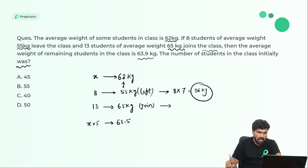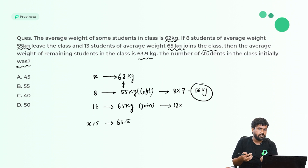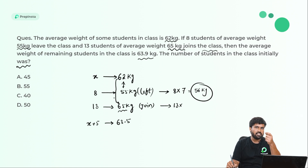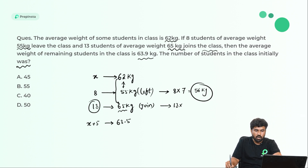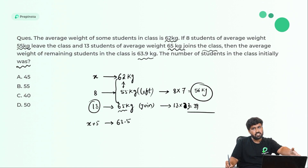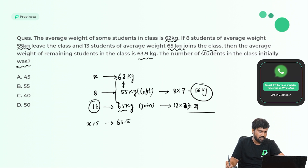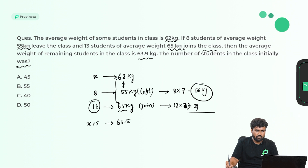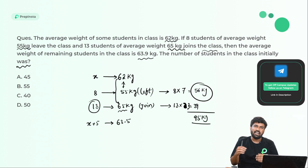Now 13 people are joining the group. If they came with exactly 62 kg average, it wouldn't change the average. But they are coming with extra weight. Compared to 62, they have 65 — a difference of 3 per person. So 3 is the extra weight added per person. Total: 13 into 3 is 39. So the total weight given to the group is 56 plus 39, which is 95 kg.